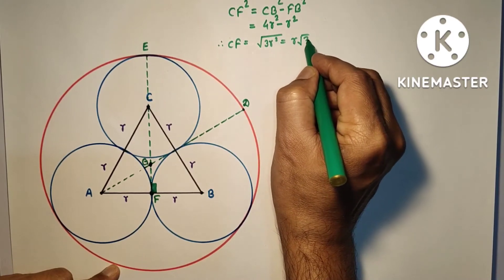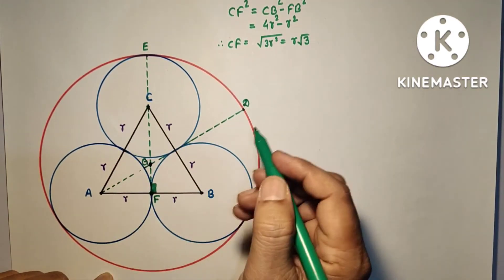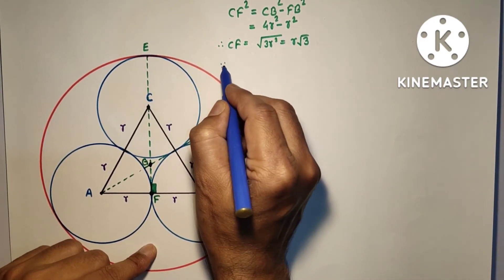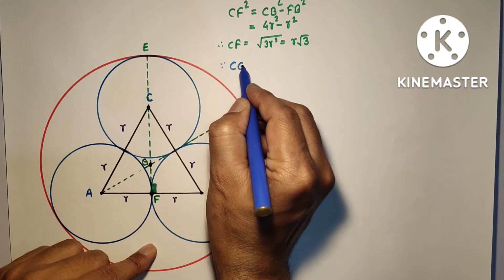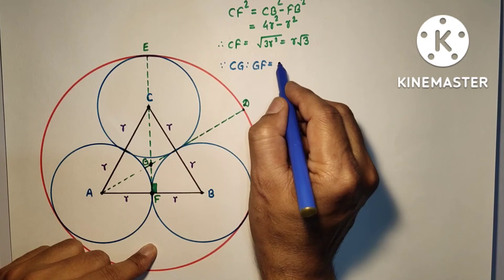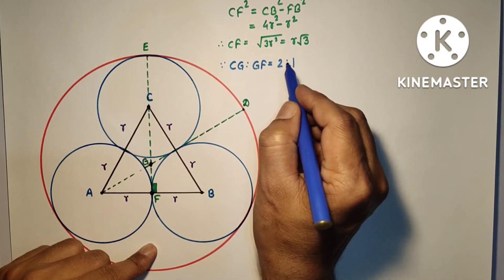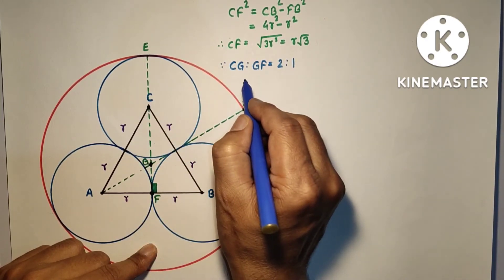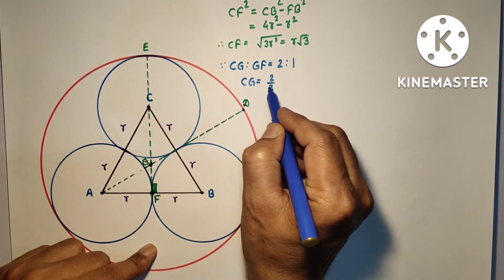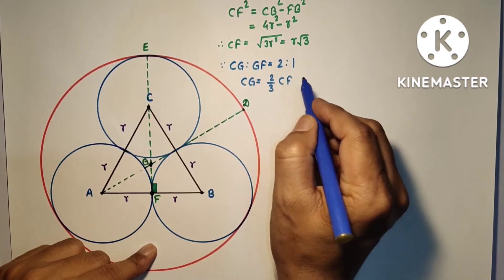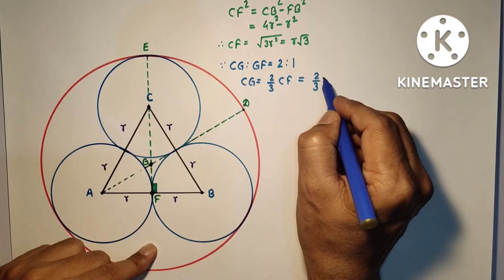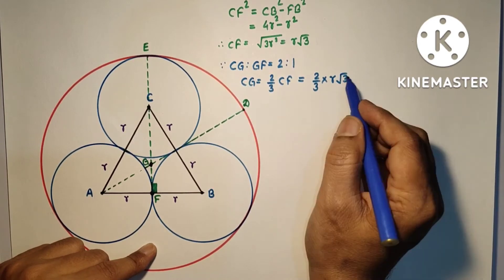But we know that CG to GF is 2 to 1. Since CG to GF equals 2 to 1, CG is equal to two-thirds of CF, and that is two-thirds of R√3. That is, CG equals 2R/√3.